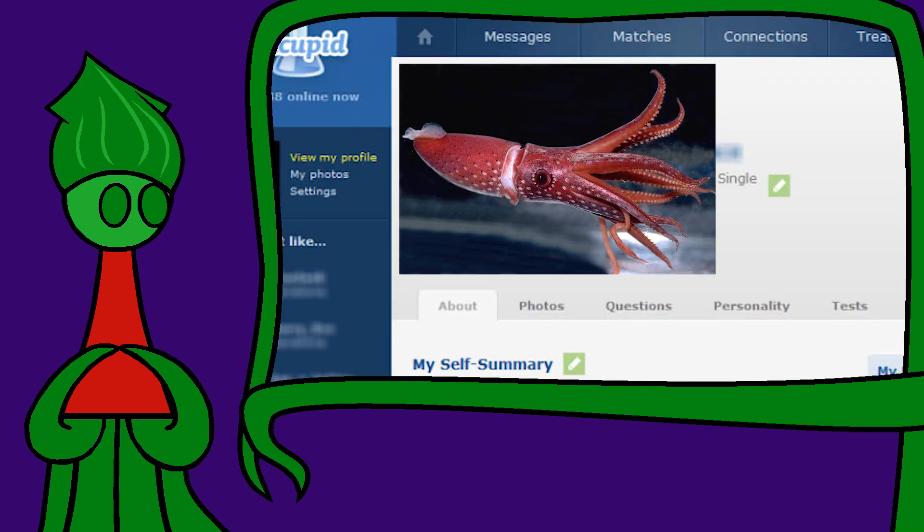Such GANs are super neato, but present a problem with, for instance, catfishing. If you date someone online, you want to make sure that they are who they say they are, and not a con artist or an evil robot.